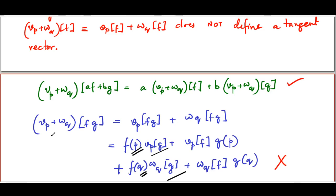We have just stated that the collection of all tangent vectors at a point P form a vector space, but we have not really proven that. The proof is straightforward - all you have to do is sit down and verify that all the basic defining properties of linear vector spaces hold here. I will leave that as an exercise for you. We still have a lot to study about these tangent vectors and their properties, and that is going to occupy us over maybe the next two lectures. See you again with further properties of tangent vectors in the next lecture.